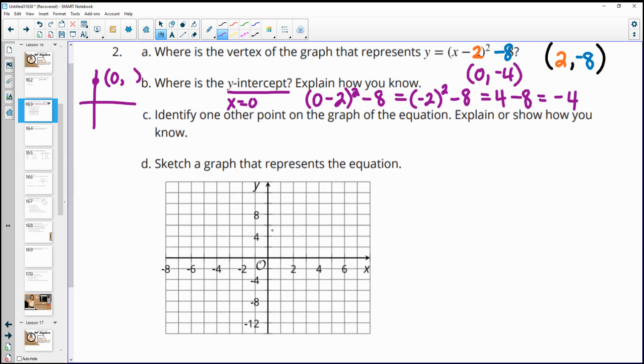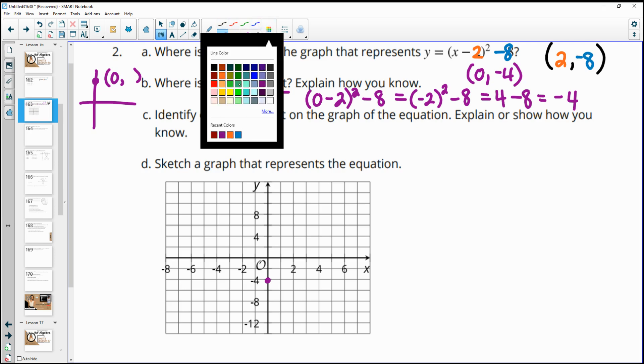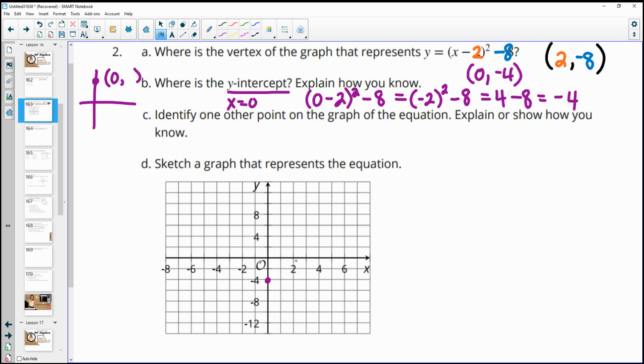And we're going to have to graph these. So I'm going to put it on here. So we've got (0, -4) as our y-intercept. And then our vertex was at (2, -8).